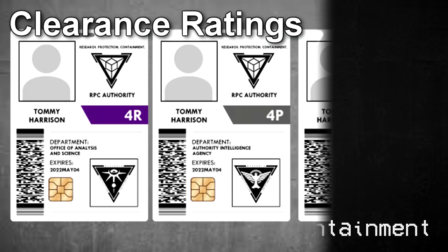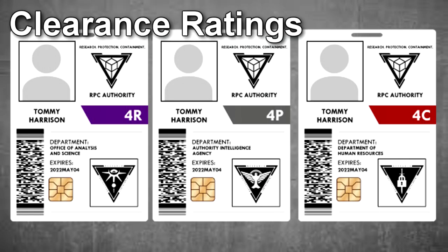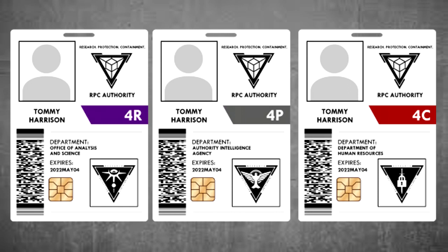Clearance ratings. Individual ratings for clearance within the authority generally follow a standardized number and letter format, such as 1R, 2P, 3C, or 4A, with the number designating a clearance level — 0 through 5 as seen here — and the letter designating a branch code. The only exception to this rule is Level 0 and Level 5 personnel, who do not follow the branch code system.